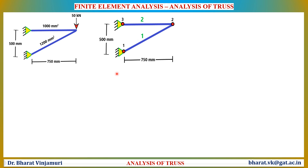After numbering the nodes, the next step is to determine their coordinate locations in the X and Y axes. To find the coordinates of each node, an origin is required. I have considered the origin to be at node number 1. There is no definite rule for placing the origin, but for ease, it is convenient to keep it at the lower left corner of the structure. Therefore, the coordinates of node 1 are (0, 0), node 2 is (750, 500), and node 3 is (0, 500). These coordinates are listed in the following table.